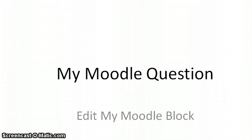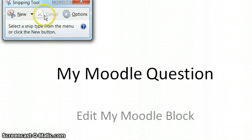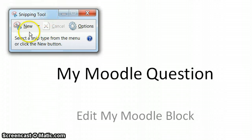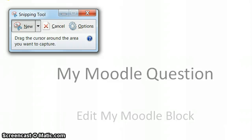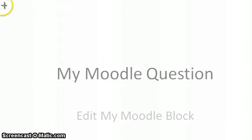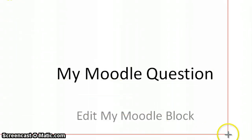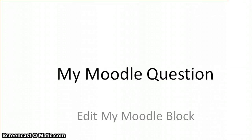Here's my Moodle question. I want to know how to edit the My Moodle block. Instead of Jing, I'm actually using something called the snipping tool, which when I click 'new' there, it allows me to select a portion.